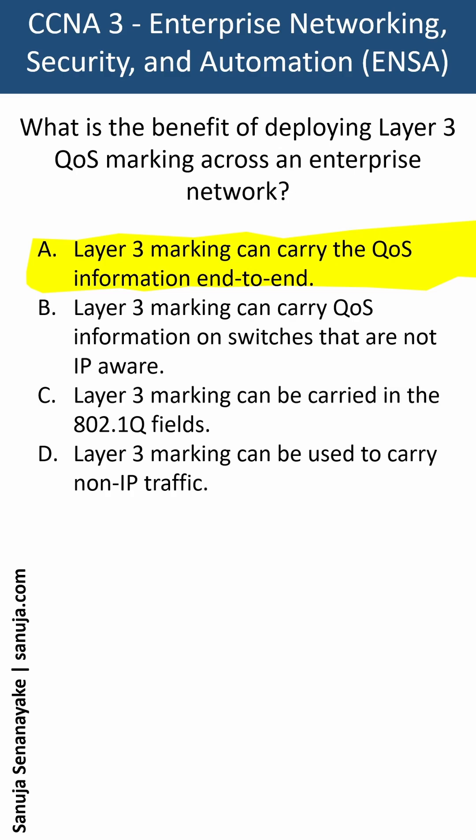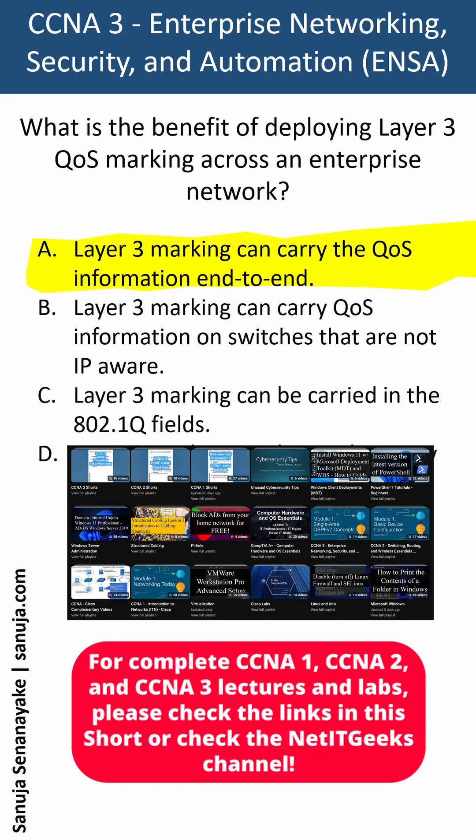Layer 2 marking of frames can be performed for non-IP traffic, and Layer 2 marking is the only QoS option available for switches that are not IP-aware. You can't do Layer 3 QoS on a switch that is not IP-aware because Layer 3 requires IP-awareness. So Layer 3 marking will carry QoS information end-to-end, making it very beneficial for an enterprise network. The answer to this question is A.